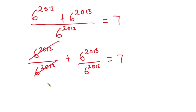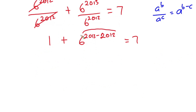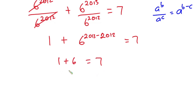The first term cancels to give 1. For the second term, using the indices rule — a to the power b over a to the power c equals a to the power (b minus c) — we get 6 to the power (2013 minus 2012), which equals 6 to the power 1, which is 6. So we have 1 plus 6, which must equal 7. And indeed 1 plus 6 is 7, so the left-hand side equals the right-hand side.